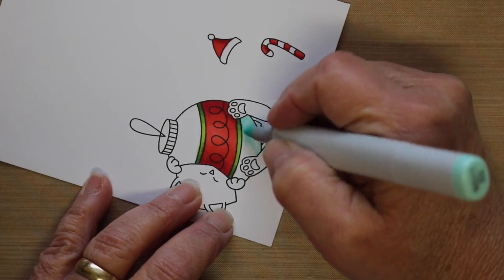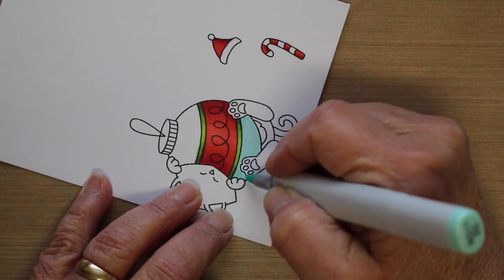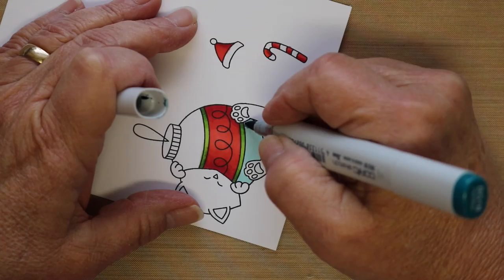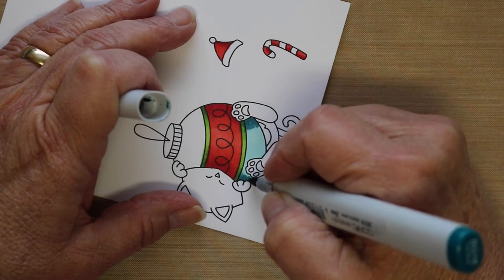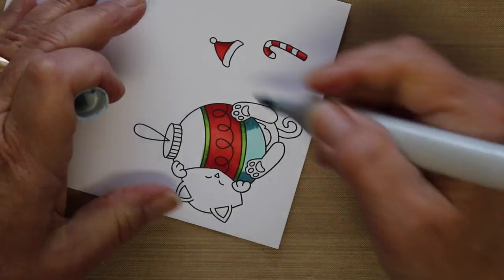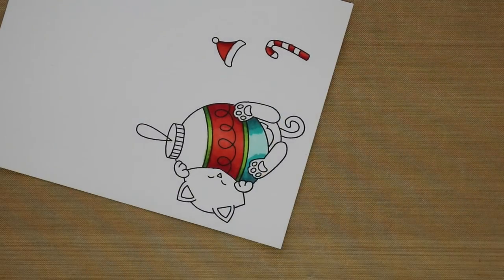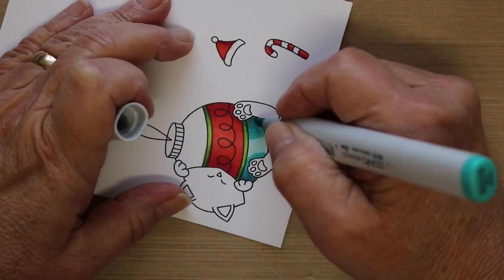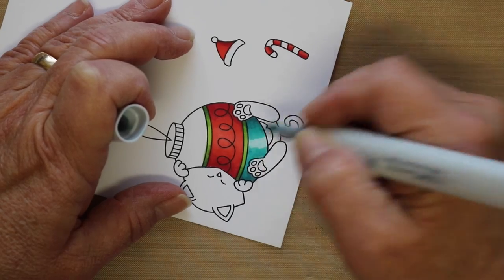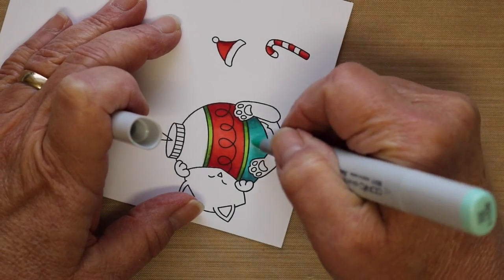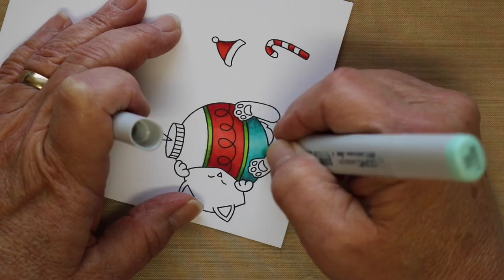Now for the bottom of the ornament and the top of the ornament, because my dark color is so dark, I put down my lightest color first to try to help me blend. And the darkest color was a BG18 and then I'm using a BG15, BG13 and a BG11 as my lightest.